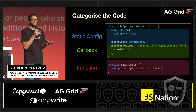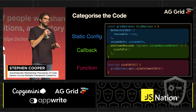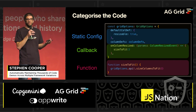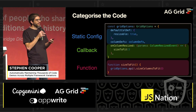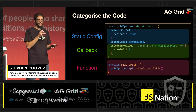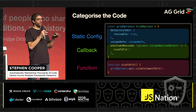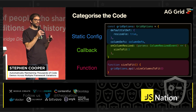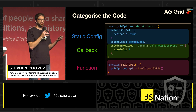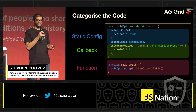The first step to achieve this is to categorize your code. Here we have some example AG Grid code: static config, a callback, and an external event. We need to categorize this so we can apply framework-specific converters to each area, because Angular uses different syntax to React depending on what you're trying to achieve.